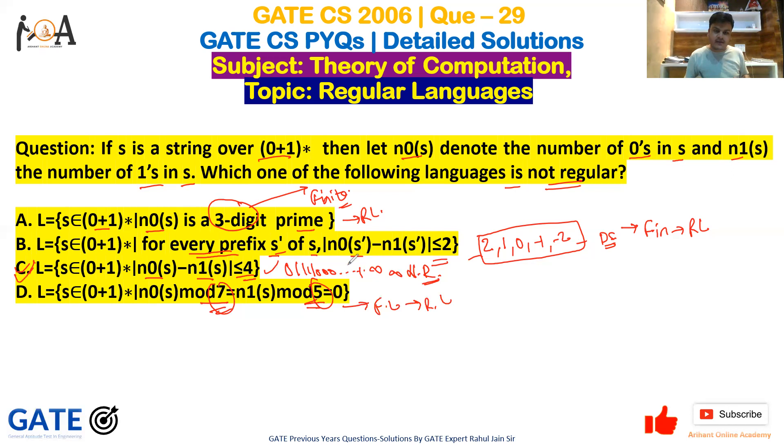So option C is the correct answer—it is not a finite language. Okay, so I hope this is clear to you. If you have any doubt or query, you can ask me. And also guys, please subscribe us, do like and hit the bell icon. Thank you so much guys, have a very nice day. Jai Hind, Jai Bharat.